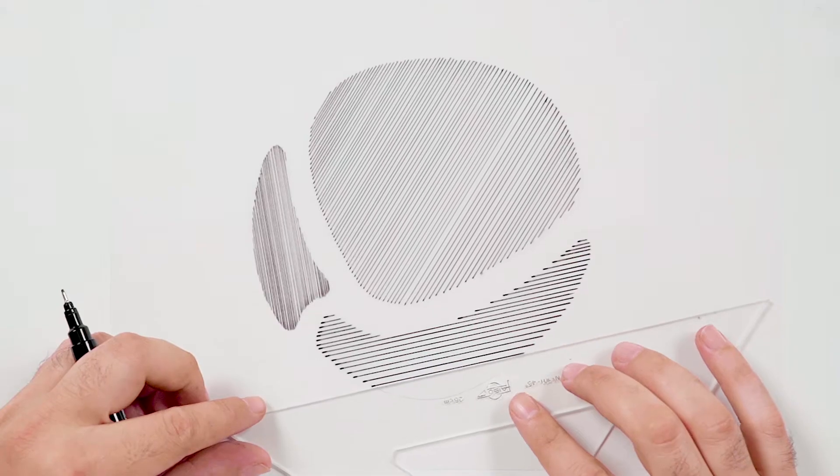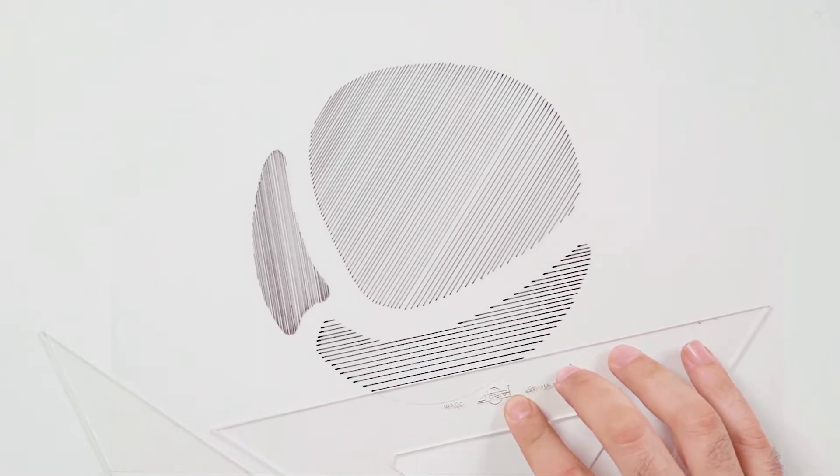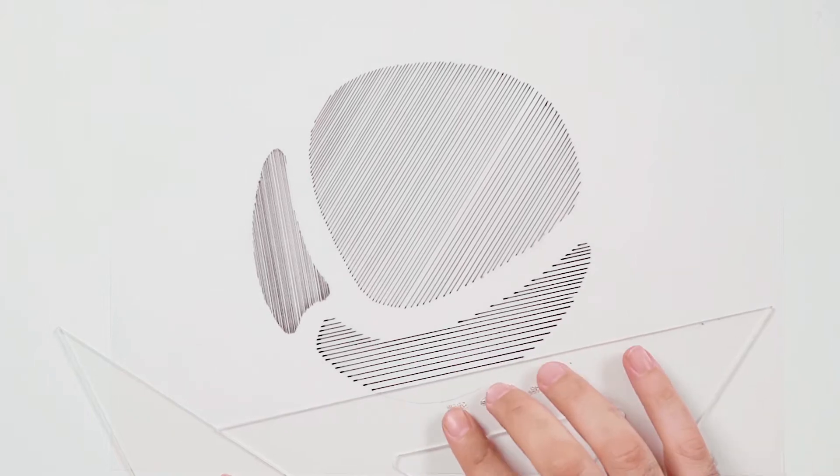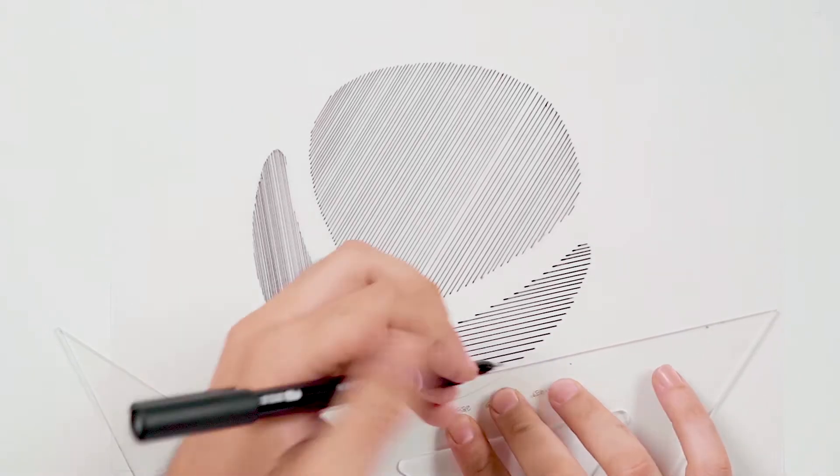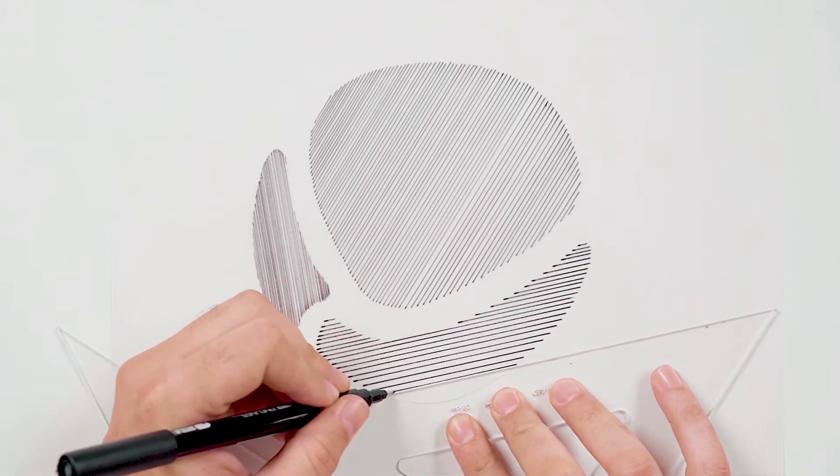There are seven different nib thicknesses: 0.1mm, 0.3mm, 0.5mm, 0.7mm, 1mm, brush and calligraphy.